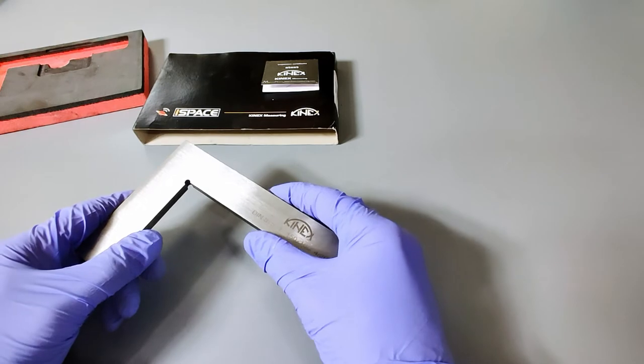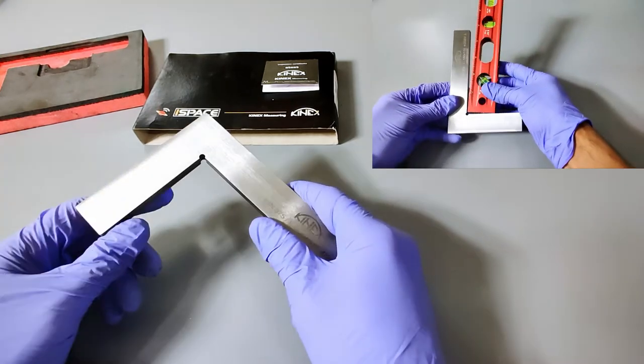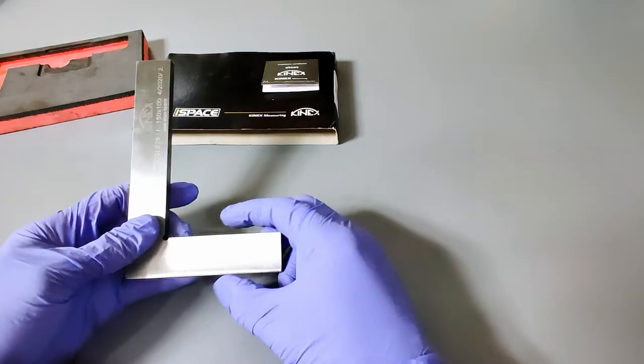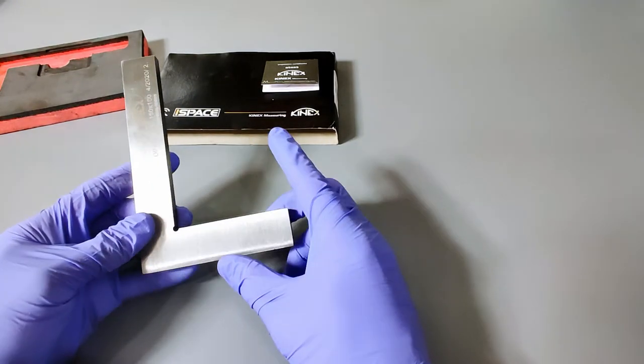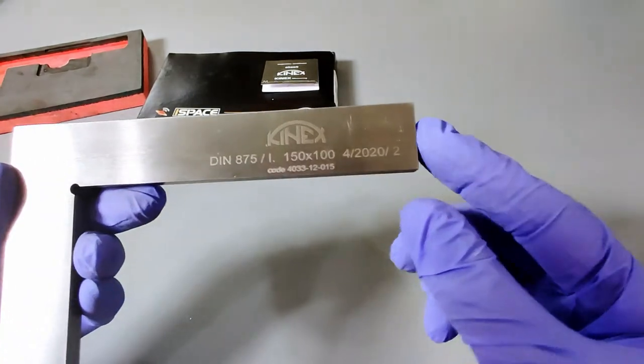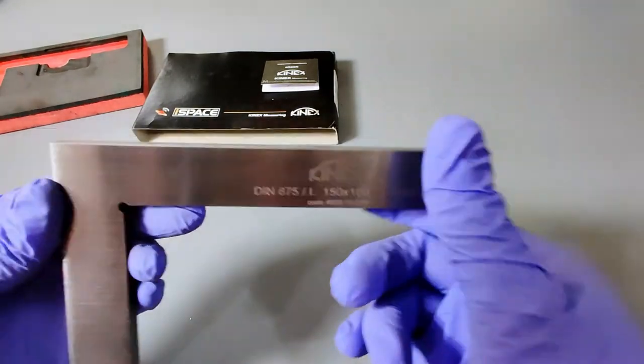So if you saw my video on the aluminum leveler by Harbor Freight, then you'll know I use this to check to make sure that the leveler was square. I highly recommend this tool. It's super cool. I'll definitely put a link in the description below where you can get this.